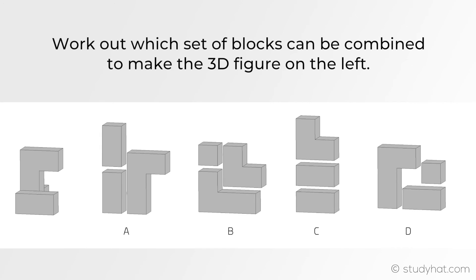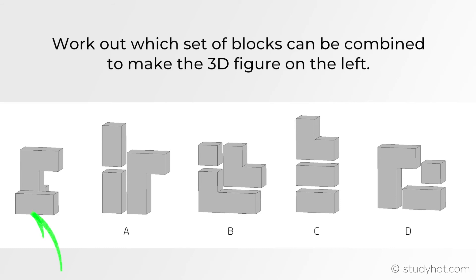Taking a look at another example: work out which set of blocks can be combined to make the 3D figure on the left. If we begin by looking at the front of this figure, we're looking for any answer with a specific shape right here. A has one. B doesn't have this shape in its figure, therefore we can cross that off. C also has this figure and so does D.